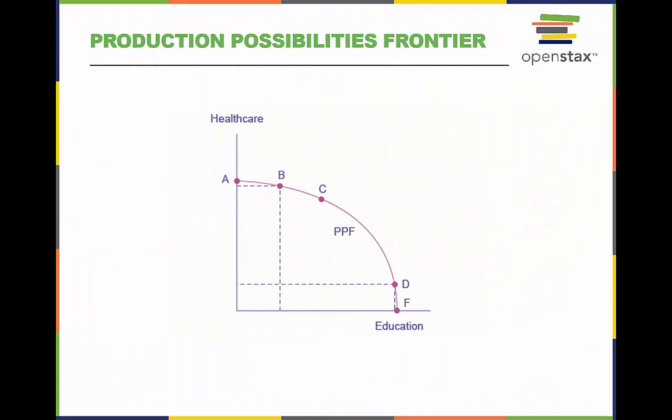A production possibilities curve is a model that shows the trade-offs society makes regarding its use of resources to produce certain goods and services.